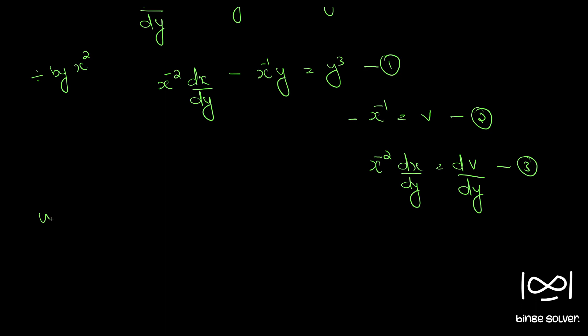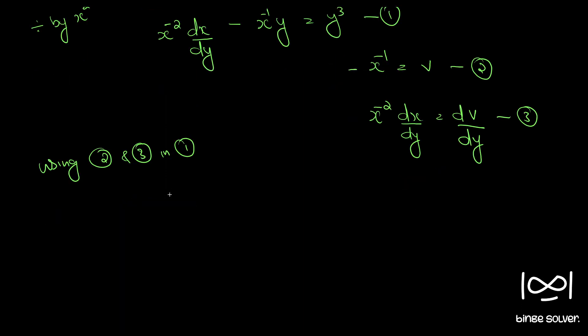Now using 2 and 3 in 1, we have dv by dy, so that becomes plus vy equal to y cube.